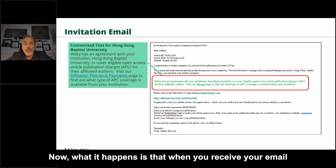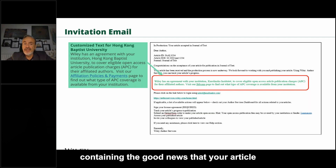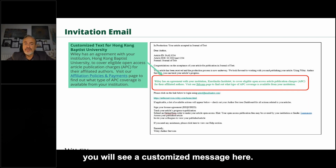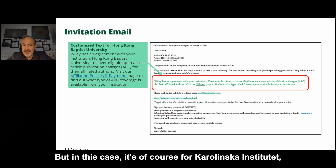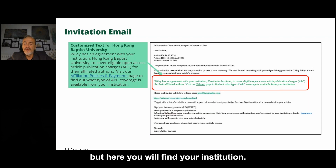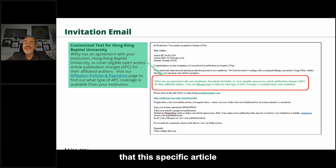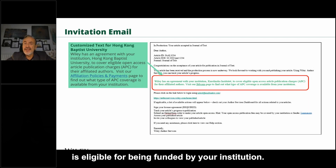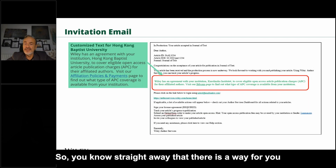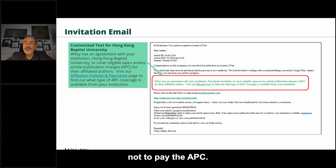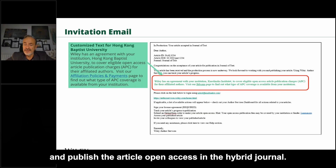When you receive your email from the publisher containing the good news that your article has been accepted for publication, you will see a customized message — in this case it's for Karolinska Institute, but here you will find your institution. This message will notify you that this specific article is eligible for being funded by your institution, so you know straight away that there is a way for you not to pay the APC if you want to publish the article open access in the hybrid journal.